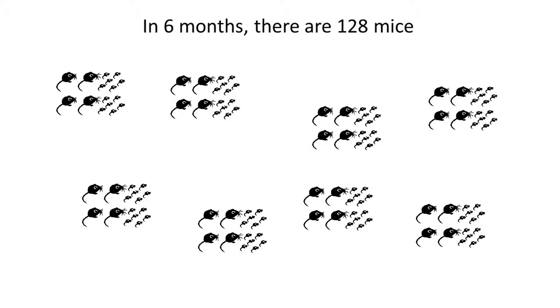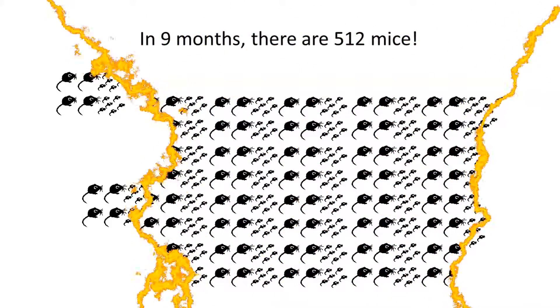Mice damage homes with their gnawing of electrical wiring. Mice only eat about 3 grams of food a day and they can get all their necessary water from the food that they consume.